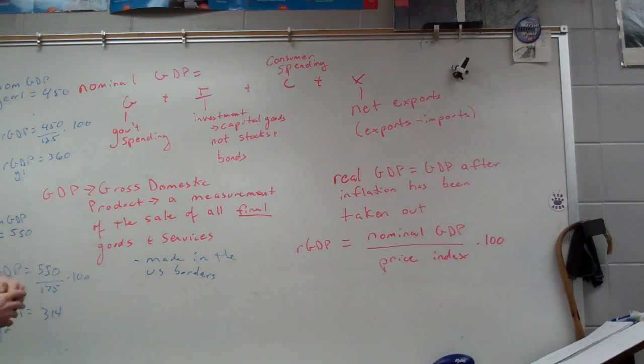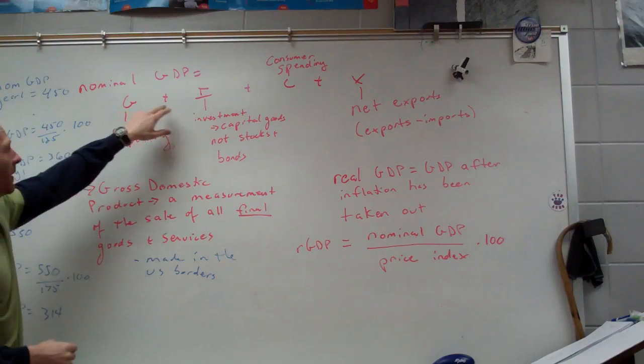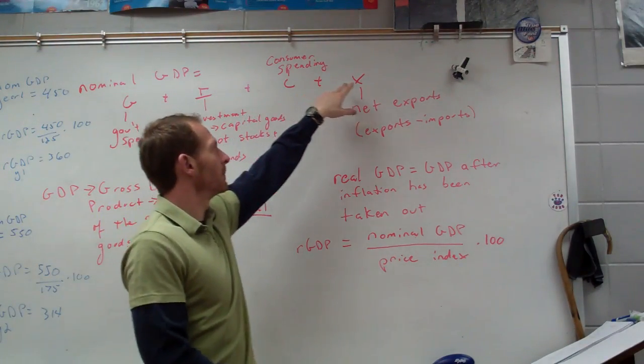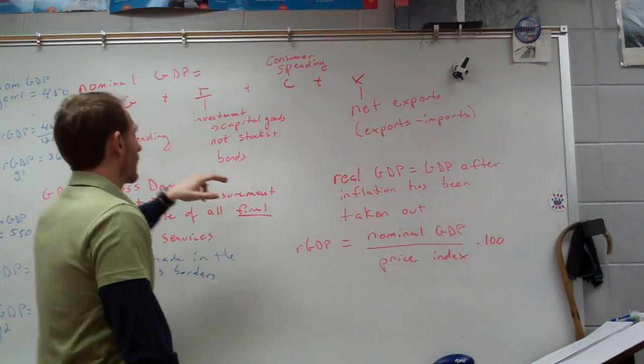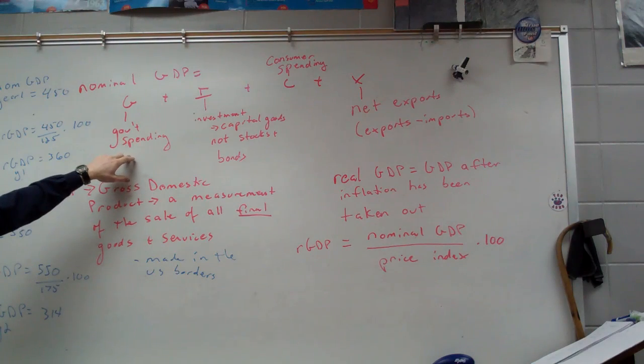And we have nominal GDP and we have real GDP. Nominal is in that year. It's the GDP of a certain year with no inflation taken into account. It's just how much total sale of final goods and services. Whereas the real GDP is where you back out inflation and we'll talk more about that in a second. But the equation for nominal GDP is G plus I plus C plus X.